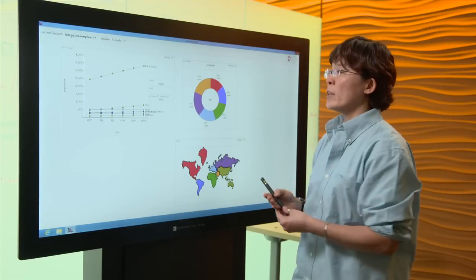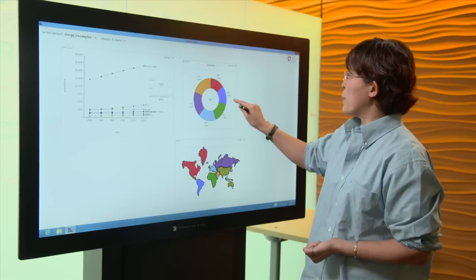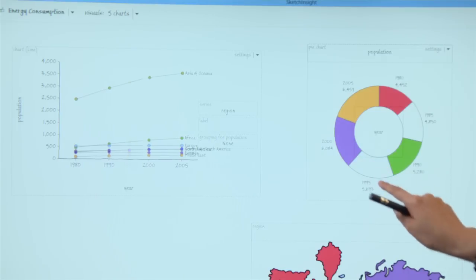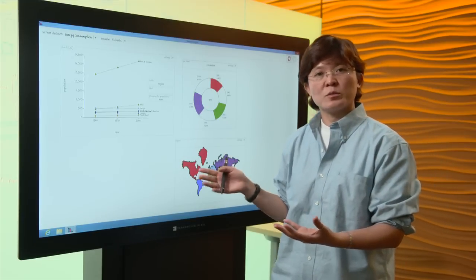These charts on a canvas are tightly coupled so I could filter some items by touching the wedge of the pie chart here and it automatically updates other parts of the chart.